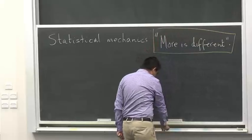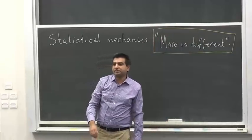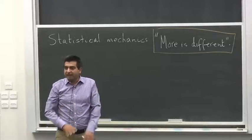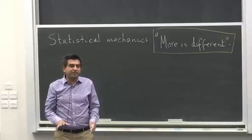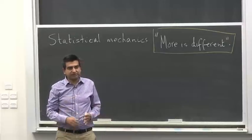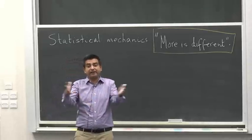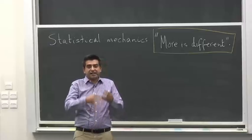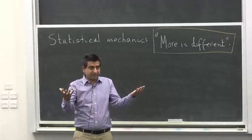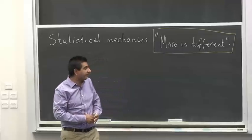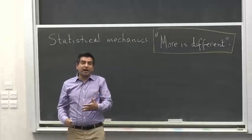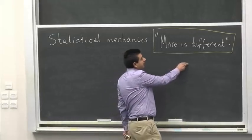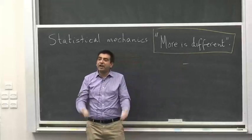If you have two particles, those two particles are not going to be the sum of single particle behaviors. If you have three particles, those three particles are not going to behave like the sum of three single particles. When you have more particles in the system, the system behaves totally differently. The network, the aggregate, the congregation, the assembly of particles gives rise to new physics. That is what it means by 'more is different.' We've already looked at systems which involve large numbers of particles — what kinds of systems have we seen in this course?